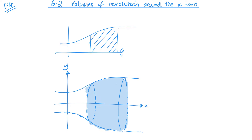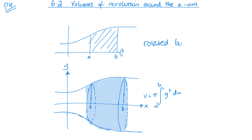Luckily, using radians makes this quite easy. If we go between the two points A and B — still the same two points on the graph, my 3D one — the volume V is given by pi times the integral of y squared dx between A and B. And that's in a revolution of 2 pi radians.